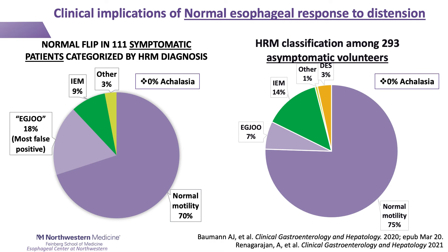In essence, nearly all of these patients had normal esophageal motor function. If we compare the HRM patterns of this normal FLIP patient cohort — seen on the left — it actually looked very similar to HRM patterns observed among healthy asymptomatic controls, represented in the pie chart on the right from a large multicenter study. Overall, a normal FLIP planometry is associated with an exceptionally low probability of having a clinically relevant esophageal motor disorder.